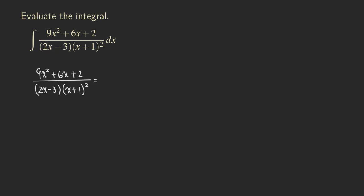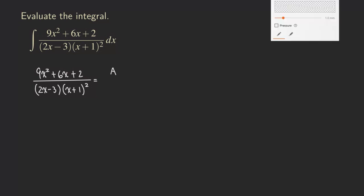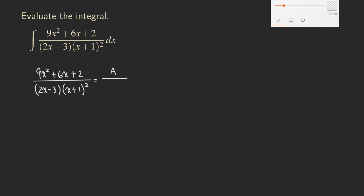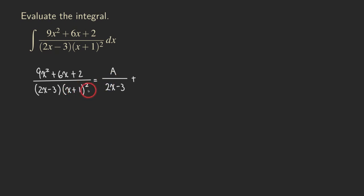For the linear factor 2x minus 3, we are going to put just a single constant in the numerator, so we can put an A. Then you may ask, what about x plus 1 squared? That's a quadratic, but we can actually treat it as a linear factor that's repeated — x plus 1 times another x plus 1. So in this case, we need to start from the lowest power for this factor. The lowest non-zero integer power would be x plus 1 to the first power. We put a B on top of that.